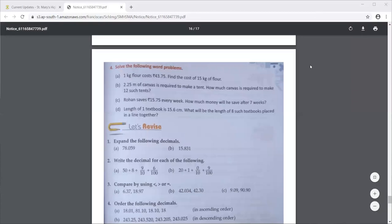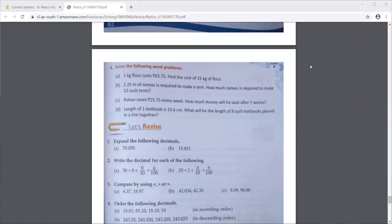2.25 meters of canvas is required to make a tent. Now canvas is that cloth with which your shoes are made, your sports shoes, the white color shoes that you wear on sports day. That is the material canvas and tents are also made of that particular material. So now here they are saying to make one tent, they need 2.25 meters of canvas. So how much canvas is required to make 12 such tents?